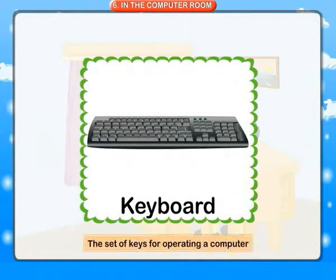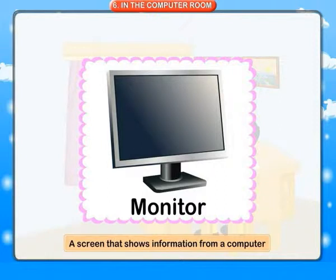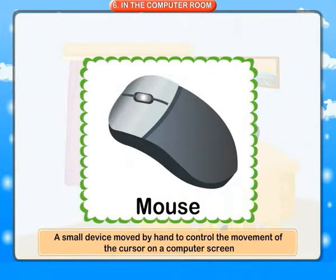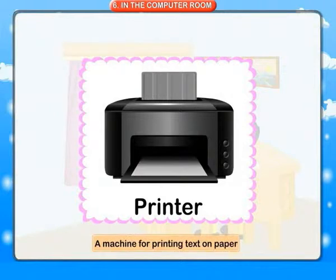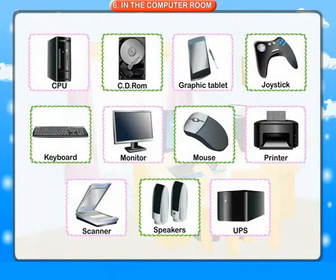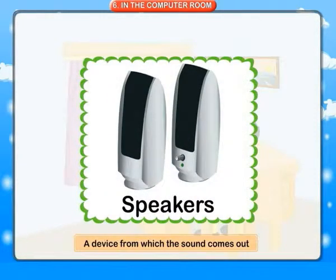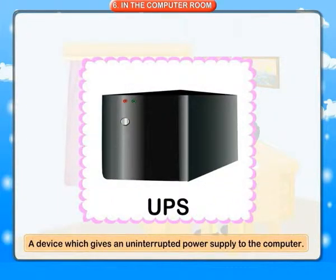Keyboard: the set of keys for operating a computer. Monitor: a screen that shows information from a computer. Mouse: a small device moved by hand to control the movement of the cursor on a computer screen. Printer: a machine for printing text on paper. Scanner: a device which copies pictures and documents stored in the computer. Speakers: a device from which the sound comes out. UPS: a device which gives an uninterrupted power supply to the computer.